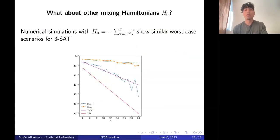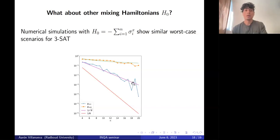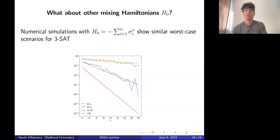Regarding other mixing Hamiltonians H0: numerical simulations with the common transverse field show similar worst-case scenarios for 3-SAT. In the figure, the violet straight line goes like 1 over square root of N, and the blue line depicts the minimal gap for several instances — showing that the minimal gap behavior is 1 over square root of N in this numerical simulation, in accordance with the rigorous results we showed for H0 being the equal superposition state projector.